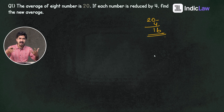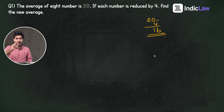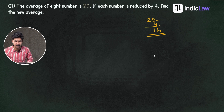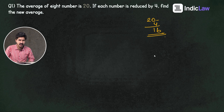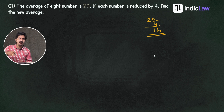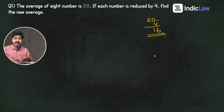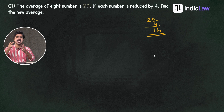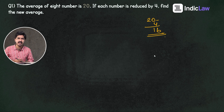This is the standard method of the average. If you ask questions, I will ask you. The question is: the average of 8 numbers is 20. If each number is increased by 8, what is the new average?